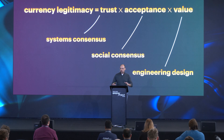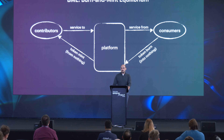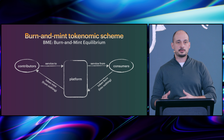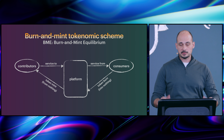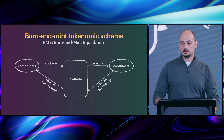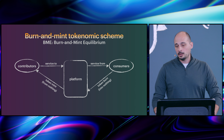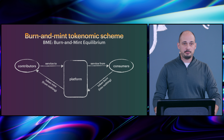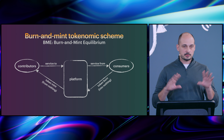Specifically, we're going to talk about the burn and mint tokenomics scheme. In the burn and mint model, you have contributors and consumers with the platform in between. Contributors provide a service to the platform, the platform provides a service to the consumer, and there are tokens involved. Contributors are paid in tokens generated out of nothing, and when consumers pay with those tokens, they get burned.